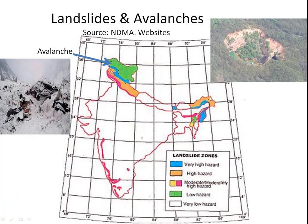Landslides and avalanches basically occur in the hilly and mountainous regions. When rainfall occurs, landslides cause major damage — blocking roads, disrupting movement and transport. The Northeast and western Ghats hilly regions experience high landslide activity. Avalanches involve sliding snow and have been devastating, with many soldiers losing their lives under glaciers, particularly in the Kashmir region.